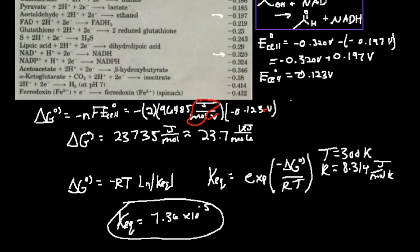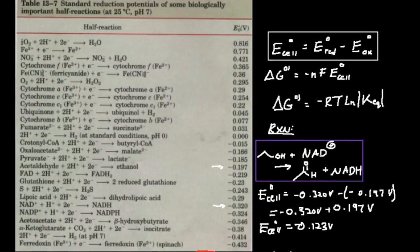This is one problem where we can take cell potential, find the standard Gibbs free energy, and then calculate the equilibrium constant from that. We're going to do a few more problems using our table of biochemical cell potentials.